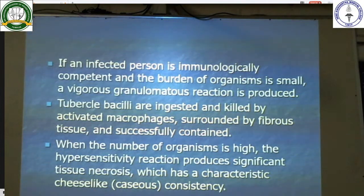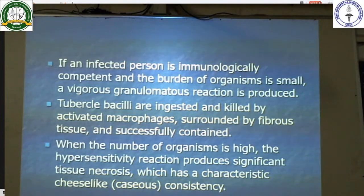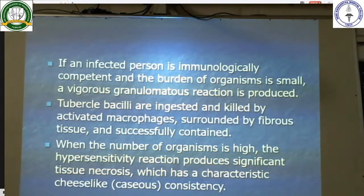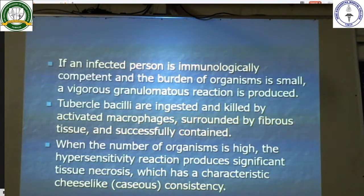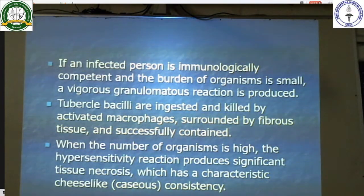If an infected person is immunologically competent and the burden of organisms is small, a vigorous granulomatous reaction is produced. Tuberculosis bacilli are ingested and killed by activated macrophages, then surrounded by fibrous tissue and successfully contained. When the number of organisms is high, the hypersensitivity reaction produces significant tissue necrosis with a characteristic cheese-like consistency, hence called caseous necrosis.